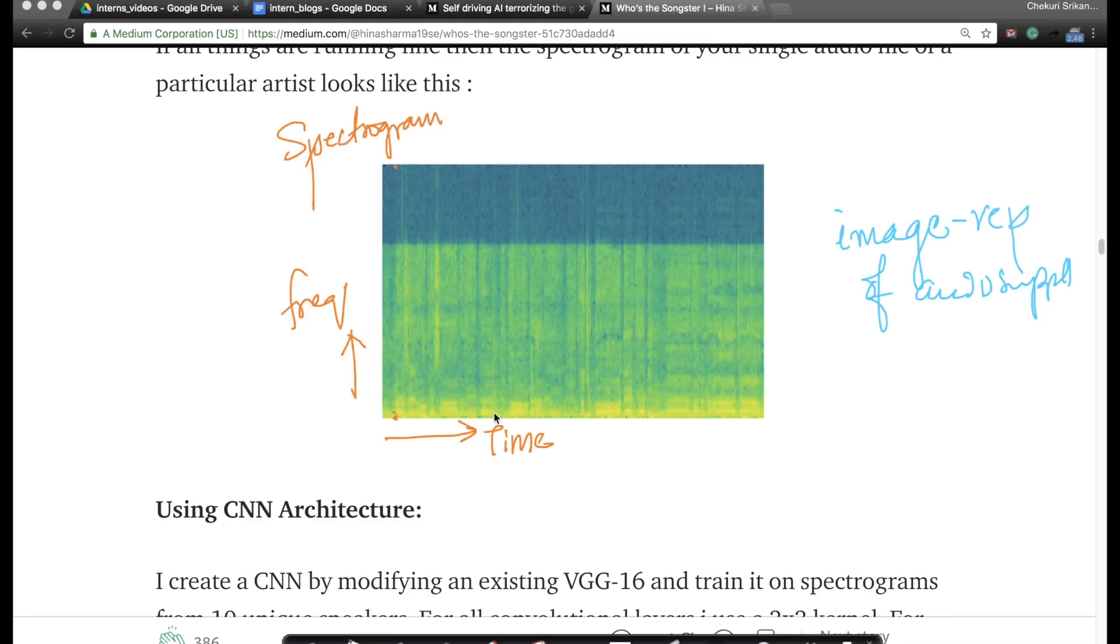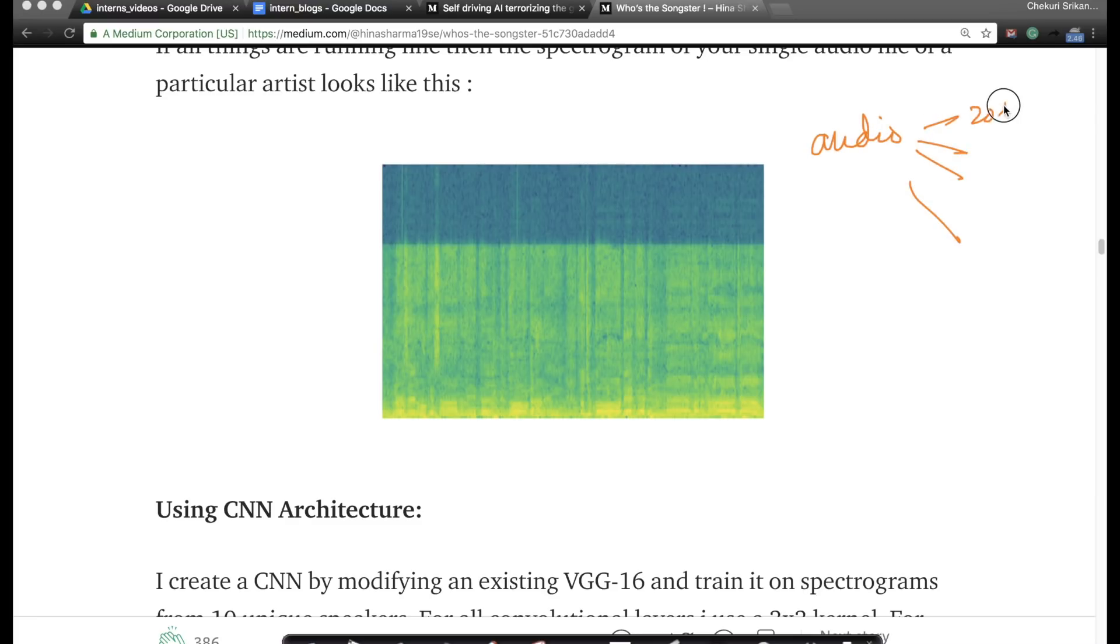This is what is called a spectrogram. Given a 20-second audio snippet, you can represent it using an image. Once you have images, we know that we can use convolutional neural networks. CNNs work very well on images—it need not be human images, this is actually a computer-generated image of a spectrogram, but still CNNs will work very well even on this data. Her strategy was: given a big audio file, break it up into smaller 20-second snippets, convert each into an image.